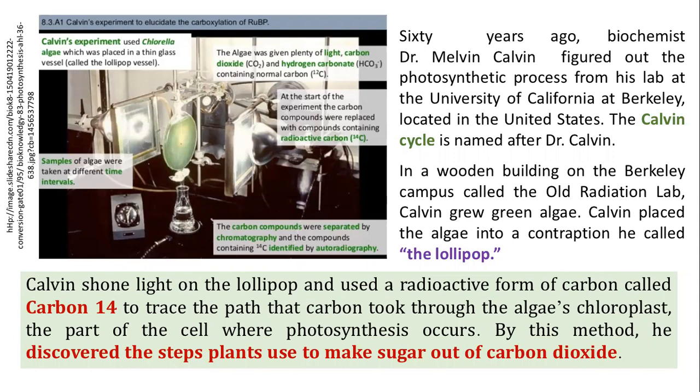The cycle Calvin discovered later came to be known by his name — the Calvin cycle. He shone light on the lollipop apparatus and used radioactive carbon-14 instead of normal carbon to trace the path that carbon takes through the algae's chloroplast and ultimately its conversion into carbohydrates. By this method, he discovered the steps a plant uses to make sugar out of carbon dioxide through photosynthesis. These are two classical experiments where isotopes were used to understand fundamental biological phenomena.